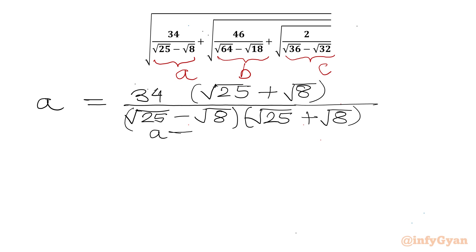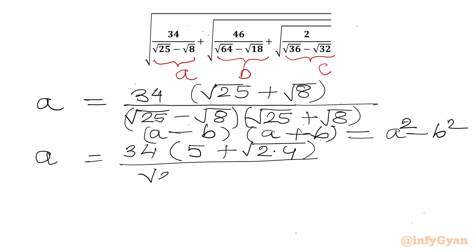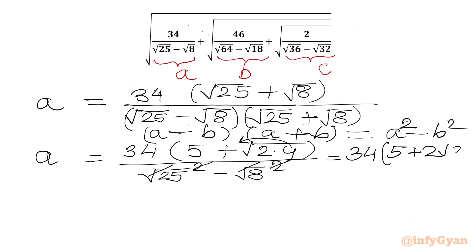In the denominator we have the (A minus B)(A plus B) form, so we can write A squared minus B squared. So A becomes 34 times (√25 plus √8) over (√25)² minus (√8)². The square root and square cancel, and √8 = 2√2, so it becomes 34 times (5 plus 2√2) over 25 minus 8.